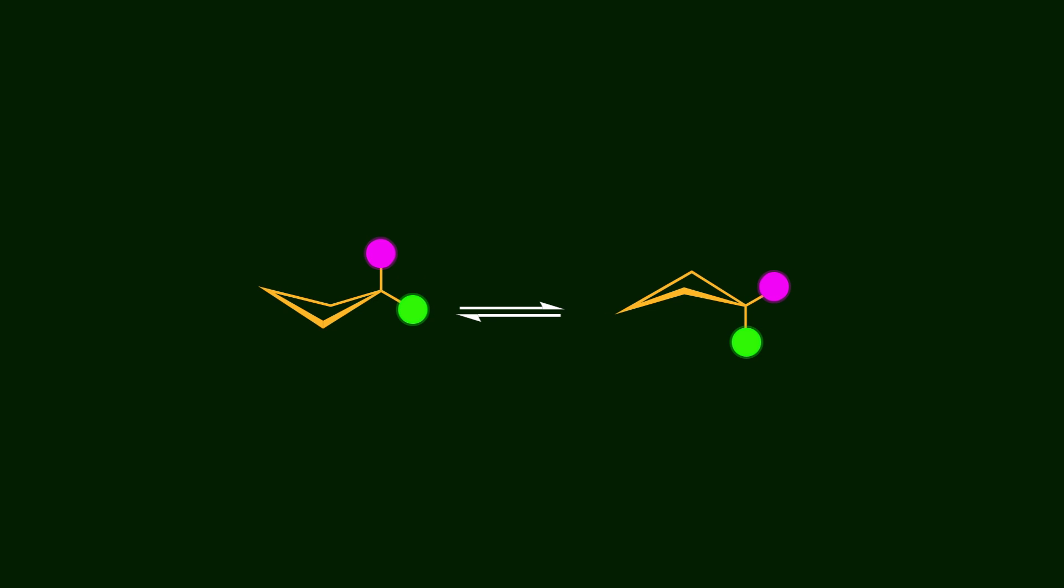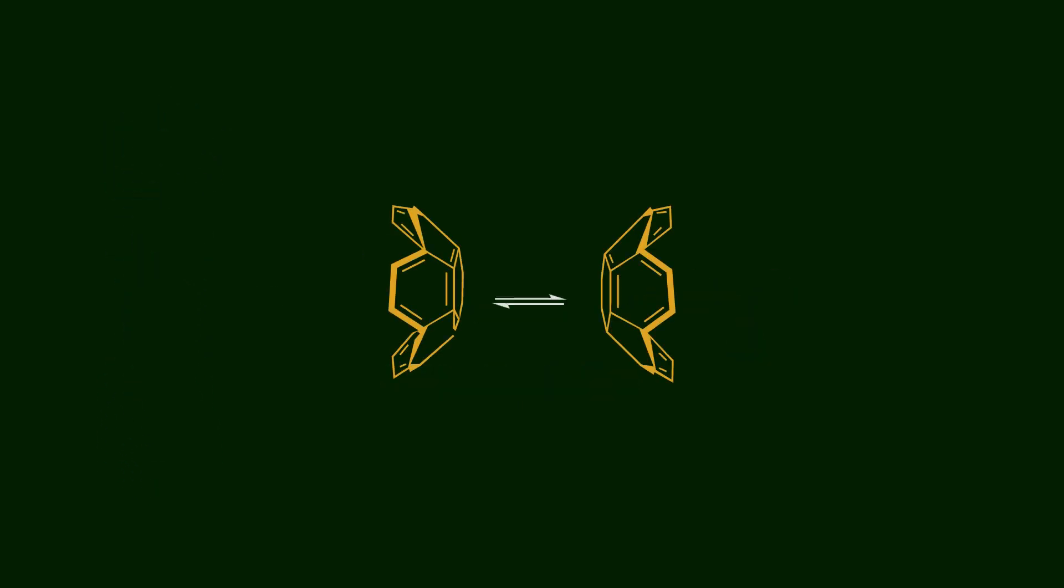Cyclobutane shows a similar type of motion, known as butterfly motion, named because it looks a bit like the flapping of a butterfly's wings. Now let's bring it back to our case. Just like cyclohexane and cyclobutane, sumanene is not static either. Instead, it undergoes a dynamic motion called bowl-to-bowl inversion.